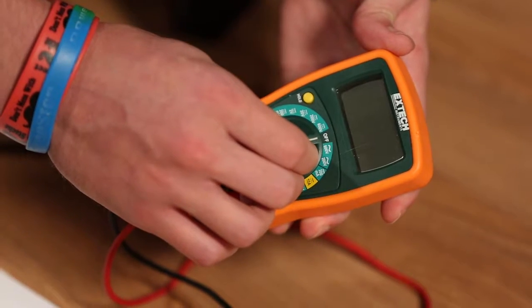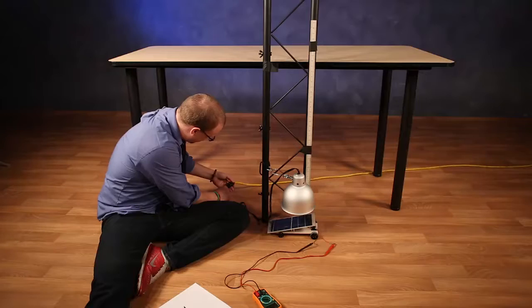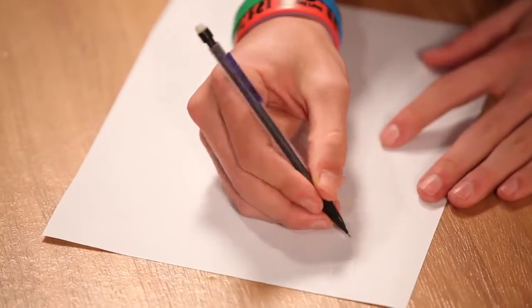Turn the multimeter to the appropriate DC voltage range. Turn on the light. Now record the voltage and the distance.